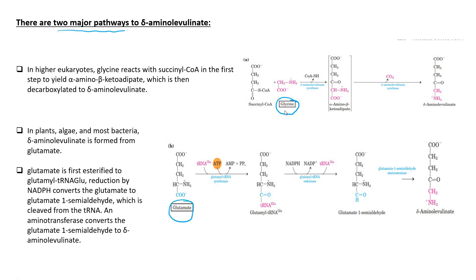The question is: in which condition is glycine used and in which condition is glutamate used? In higher eukaryotes, delta-aminolevulinate is made from glycine. But in plants, algae, and most bacteria, the synthesis of delta-aminolevulinate happens from glutamate. So the major precursor for porphyrin synthesis is glycine.